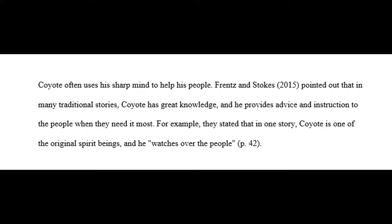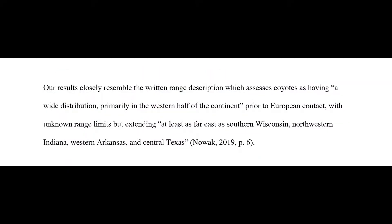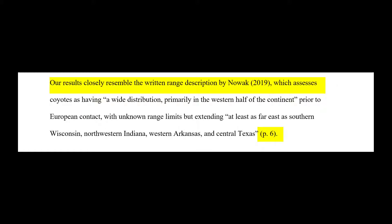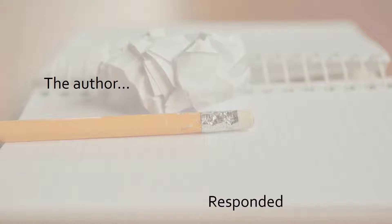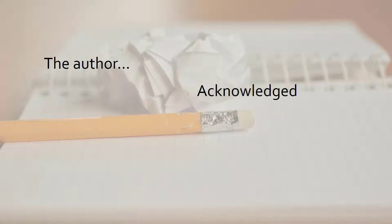Whether you are paraphrasing or quoting, you'll typically use a signal phrase to introduce the quotation with the author's last name, the year, and the page number included. In APA style, this can be done with the author's last name, year, and page number at the end of the sentence. Or it can be done with the author's name mentioned in the signal phrase, followed by the date in parentheses, and the page number at the end. There are many ways that you can vary the signal phrases you use — try to mix it up so your paper has a nice flow and doesn't sound repetitive.